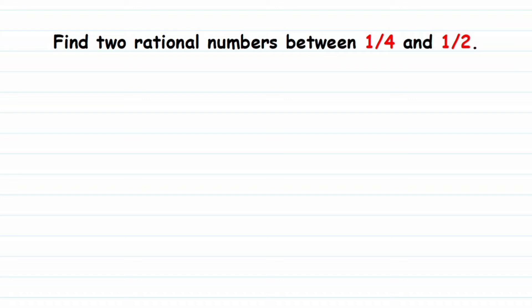Here's one more question on rational numbers. The question is: find two rational numbers between 1/4 and 1/2. We're going to see this kind of question from an exam point of view. They're asking us to find out two rational numbers between 1/4 and 1/2. There are infinitely many rational numbers between two rational numbers, so we just have to find two of them.